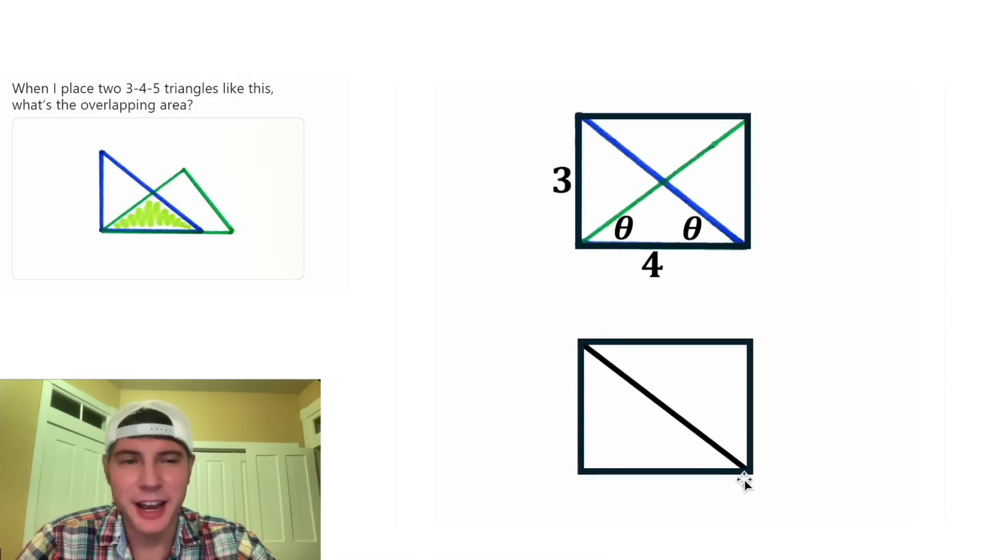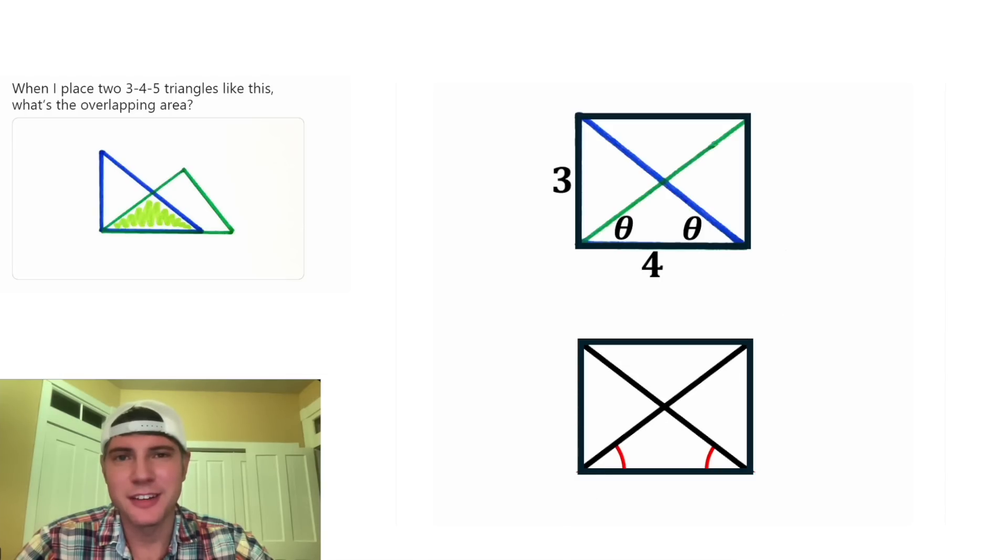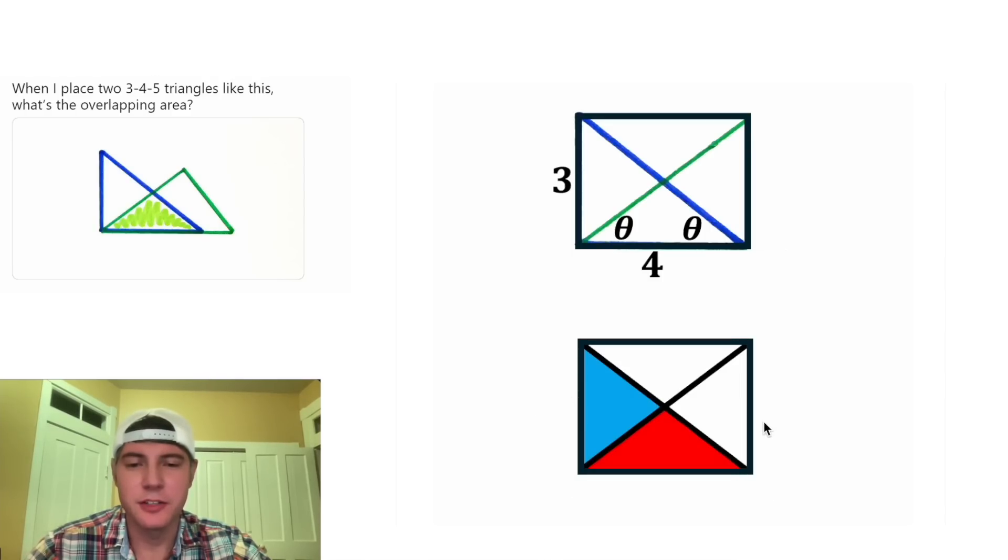If you draw a rectangle with a diagonal, and then you draw another line that has these two angles the same, then they're both diagonals of the rectangle. And diagonals of rectangles have lots of cool properties. One of them is it splits it up into four triangles, and all of these triangles have the same area.